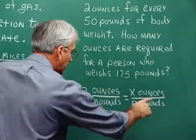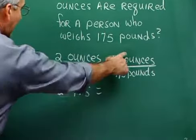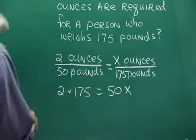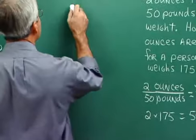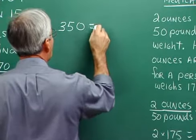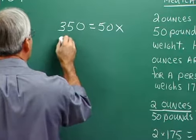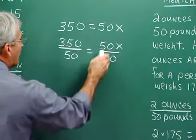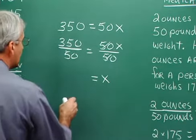Cross multiplying, 2 times 175 on one side and 50x on the other. Two times 175: 2 times 5 is 10, 2 times 7 is 14 carry 1, 2 times 1 is 2 plus 1 is 3 — so that's 350 on the left. On the right we have 50x. To isolate x, we divide both sides by 50; the 50s cancel, and 350 divided by 50 is 7. So the answer is 7 ounces of medication required for the person weighing 175 pounds.